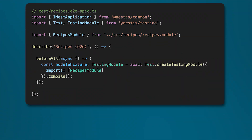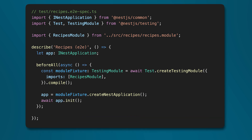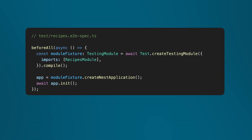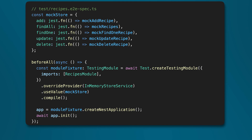Once you have the module set up, you can create an application instance using createNestApplication and initialize it with init. You can stop the application with close after the tests are done. With the test module, you can even override parts of your application when needed. For example, you can override your in-memory store service and use a mock value instead.